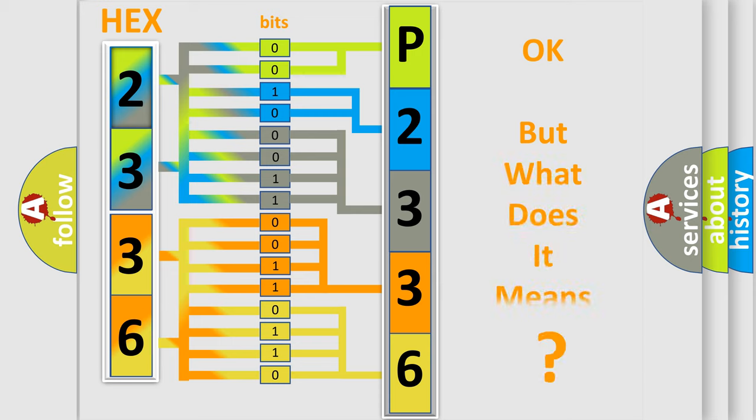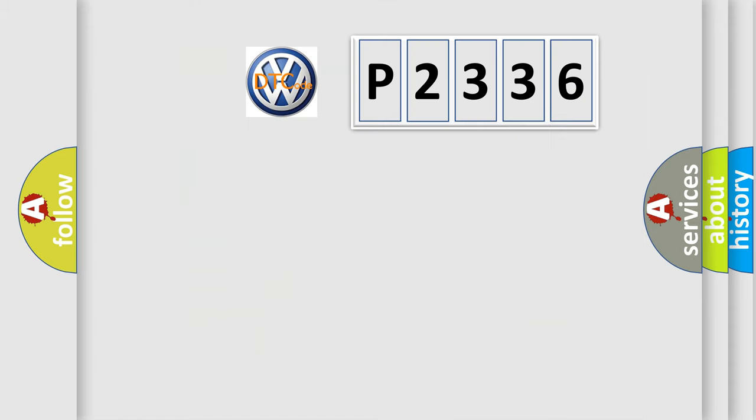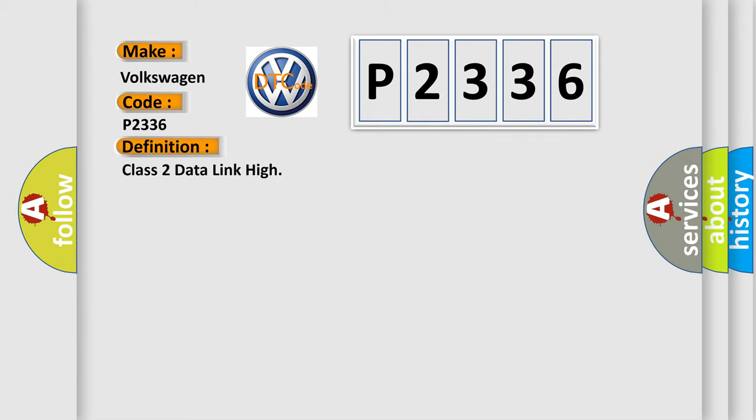The number itself does not make sense to us if we cannot assign information about what it actually expresses. So, what does the diagnostic trouble code P2336 interpret specifically? Volkswagen car manufacturers. The basic definition is Class 2 data link high.